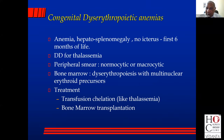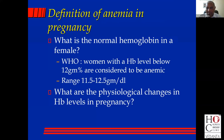Congenital dyserythropoietic anemias are not common, but you will have a person with anemia, a low retic, hepatosplenomegaly, and a bone marrow which is full of developing erythroid cells.